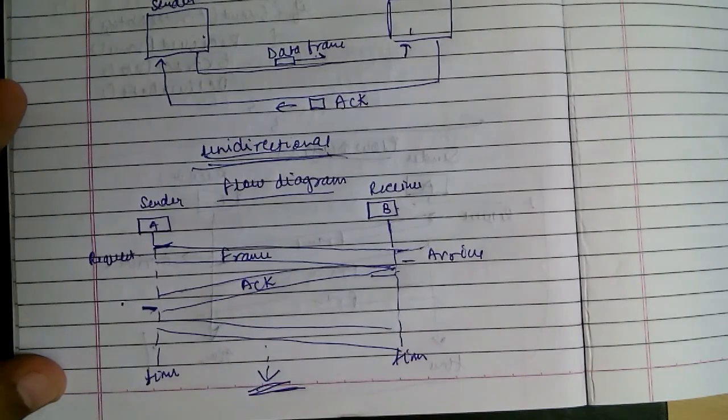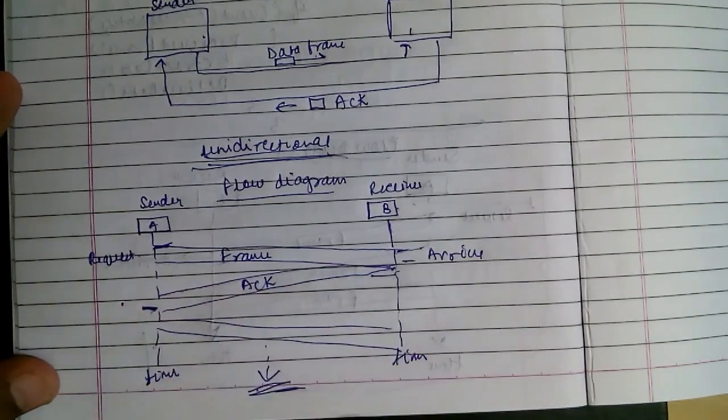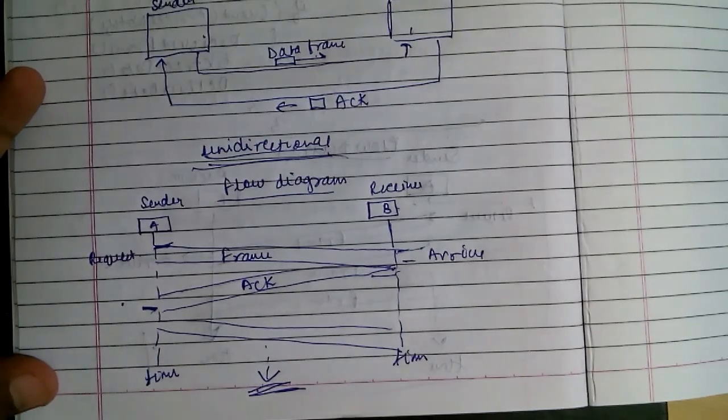So this is the stop and wait protocol in which the flow control is implemented. Still no error control is implemented in this. That will be done when we discuss the noisy channels and the various protocols in this.